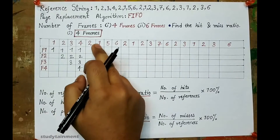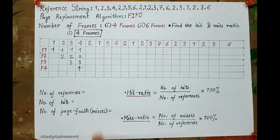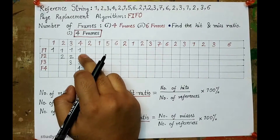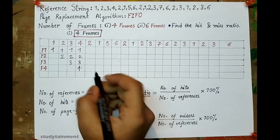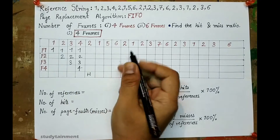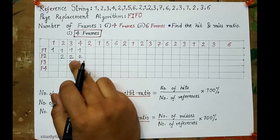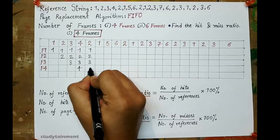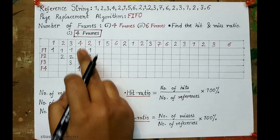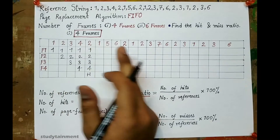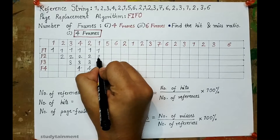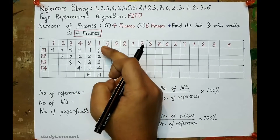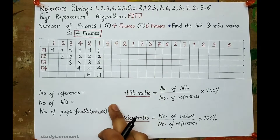Now 2 has come, but 2 is already present — this phenomenon is a hit. 1, 2, 3, and 4 are in frames and we do not need to replace any of them. Now 1 comes — 1 is also present, so this is also a hit.